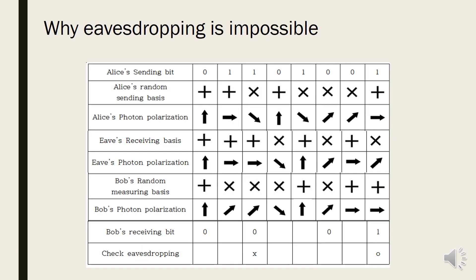This is the example of checking eavesdropping. Alice sends 01101001. Sending, receiving, and confirming sifted key is same way as previous example. But there is a difference in red box. Eve picks rectilinear bases, which is different to Alice, and sends horizontal photon.